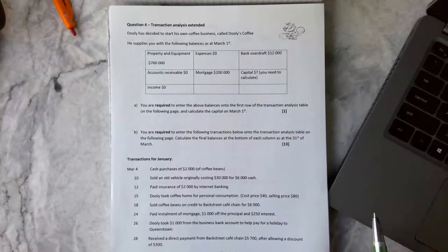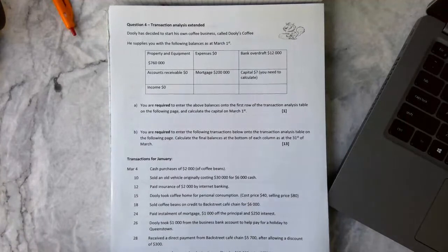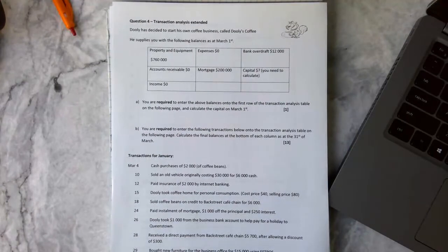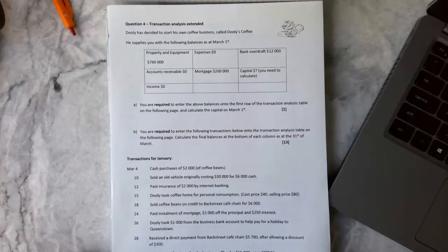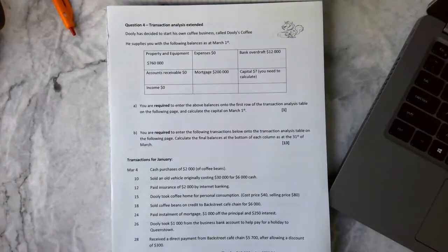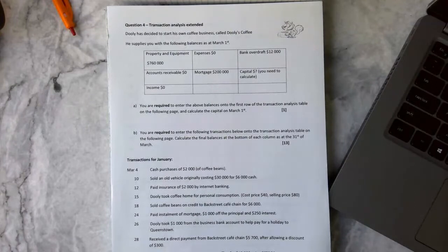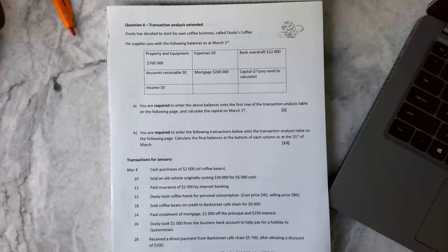Kia ora team, today we're going to be looking at some transaction analysis from the term two examination and trying to work out where most of us made pretty simple mistakes. The question starts off with Dooley has decided to start his own coffee company called Dooley's Coffee. He supplies you with the following balances as at March 1st.